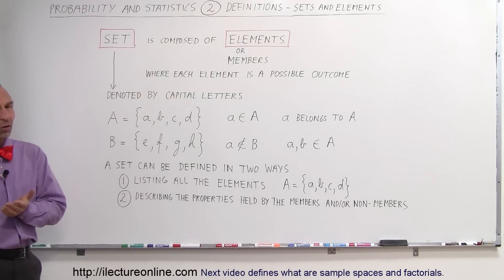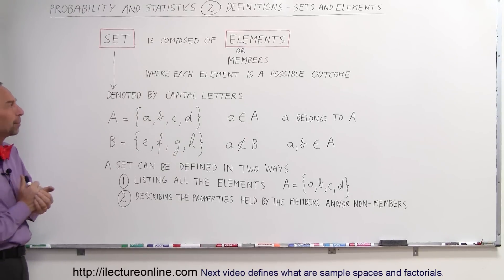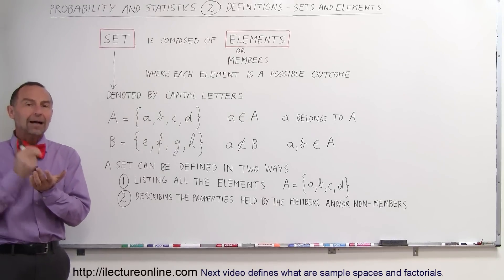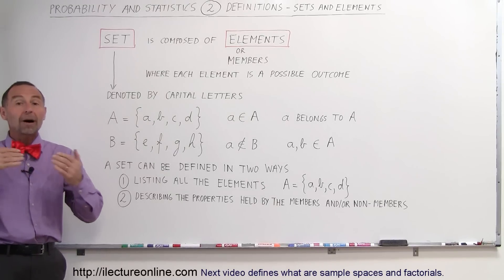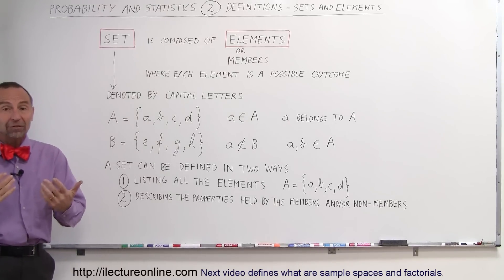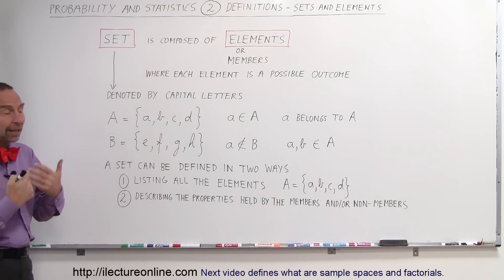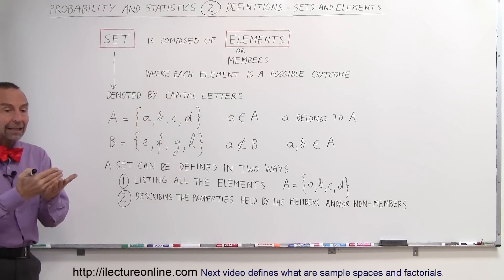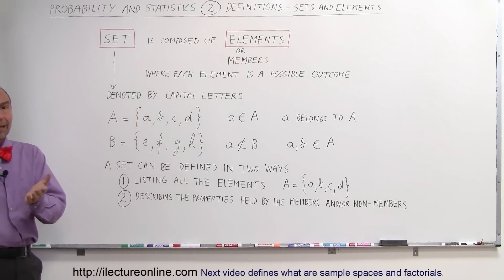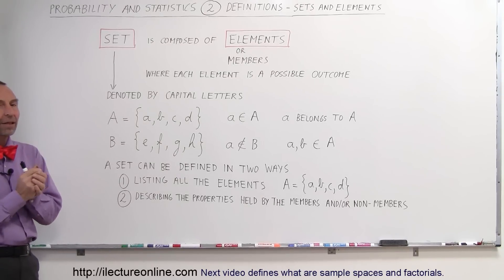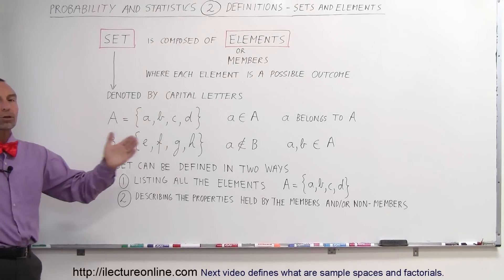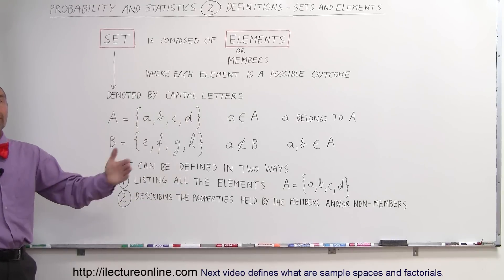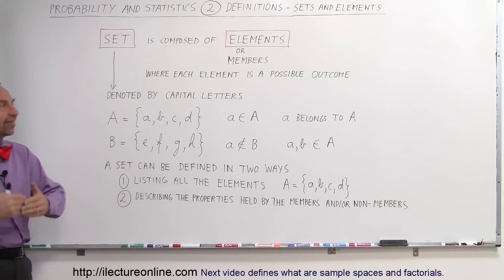Elements are sometimes also called members, and each element is typically an outcome of a possible event — something that may happen — and so the outcome of that is an element. An element makes up a set, so there may be multiple outcomes, therefore there are multiple elements in a set.